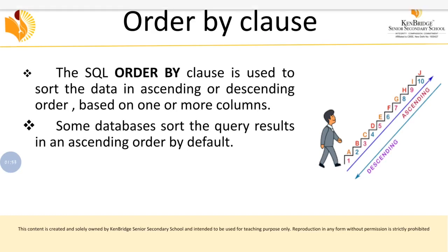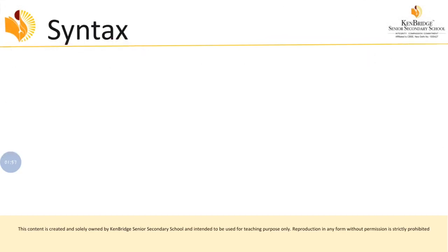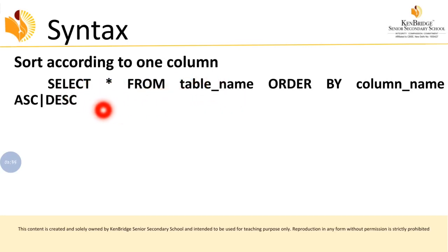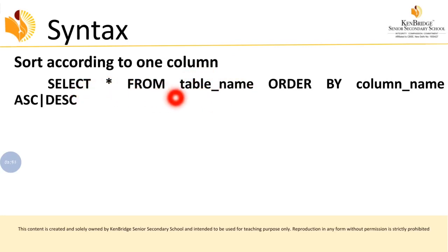Let's see the syntax and example of the ORDER BY clause. Here I have given the syntax for sorting only one column. First we will see single-column sorting, then we will move on to multiple-column sorting. The basic syntax is: SELECT * FROM table_name ORDER BY column_name. SELECT * fetches all attributes from the specified table.